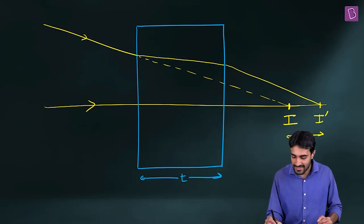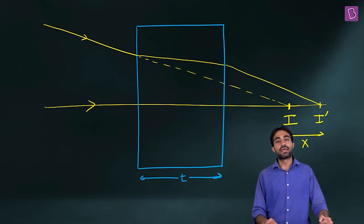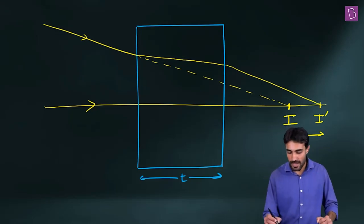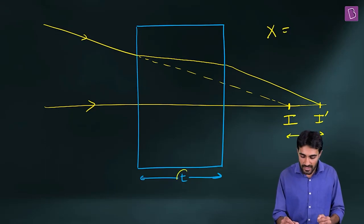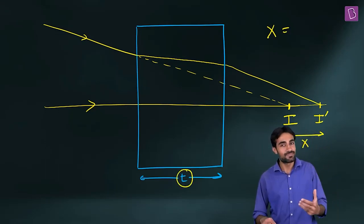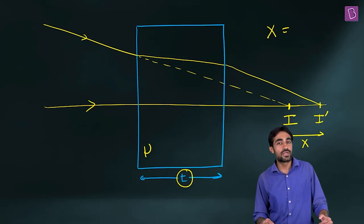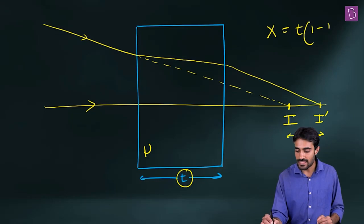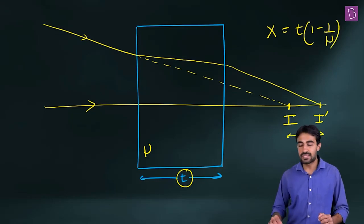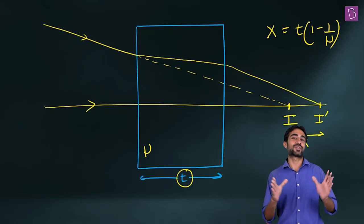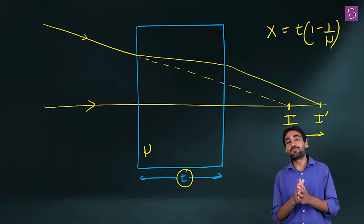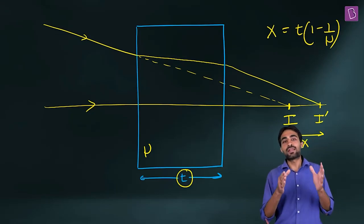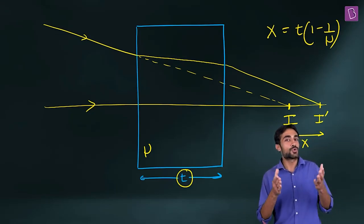Let's say the shift is X. There is an interesting relationship between this shift and the thickness of our glass slab. If the refractive index is mu, we can say X is equal to T times (1 minus 1/mu). This is how we calculate the shift. If there are multiple glass slabs, for each slab we write such a formula and then add up all the shifts to get the total shift.